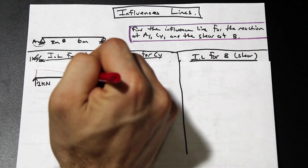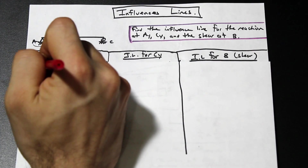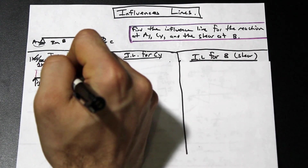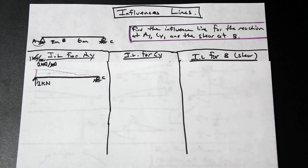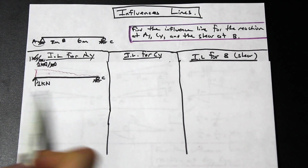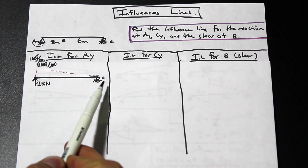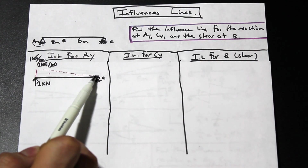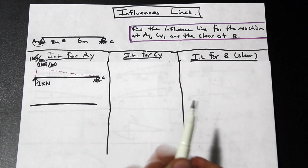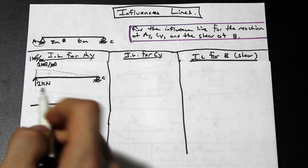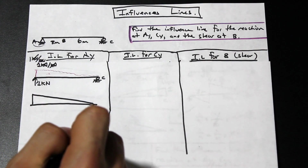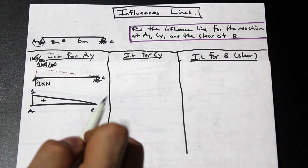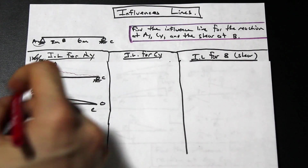The beam deflects up and then goes back down towards C. The units for influence lines are kilonewtons per kilonewton, which cancel — so it's simply dimensionless. One trick to know: if the influence line tends toward a support that's a roller or pin, it passes through zero at that point. So our influence line for AY is one at A and zero at C.